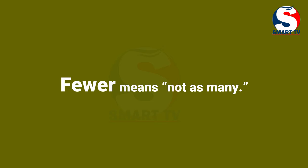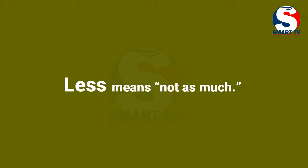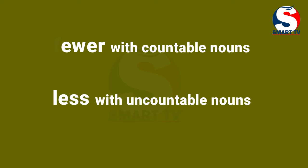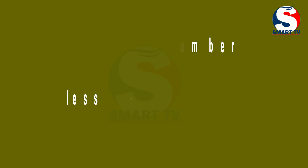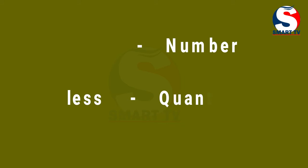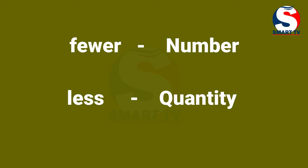Before filling in the sentence, go through the meaning. 'Fewer' means not as many; 'less' means not as much. We use 'fewer' with countable nouns only. 'Less' is used with uncountable nouns. 'Less' is used when you are talking about quantity, and when you are talking about number, you use 'fewer'.